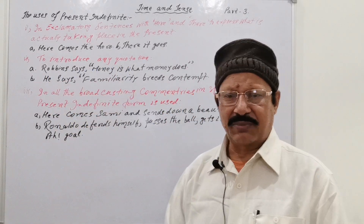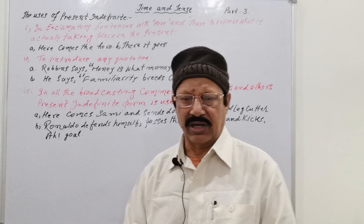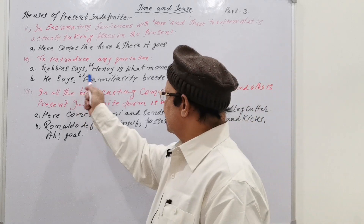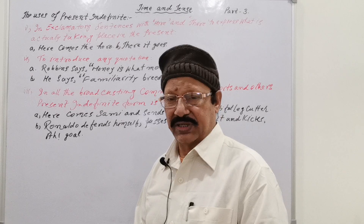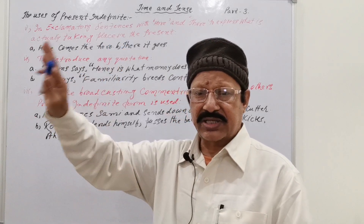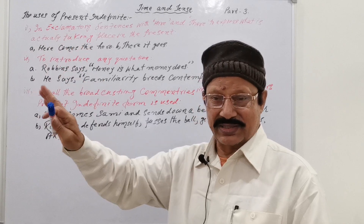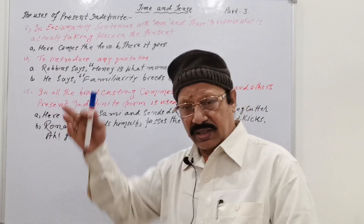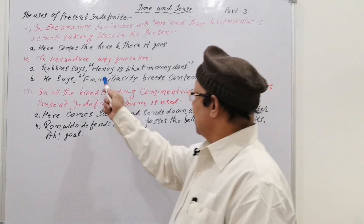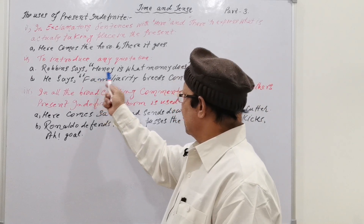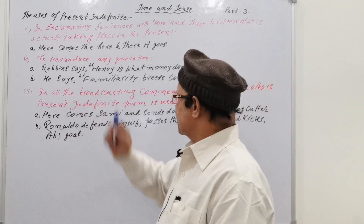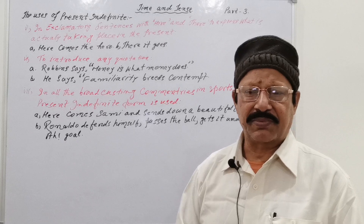Point six: to introduce any quotation. If you want to say a quotation or a saying of someone, you generally speak it in present indefinite. For example, 'Robin says' or 'such and such great person says' — these are all spoken in present indefinite. For instance: 'Money is what money does,' or 'He says familiarity breeds contempt.'